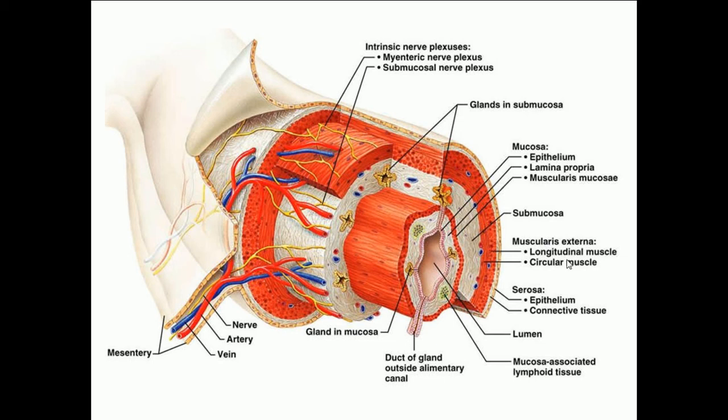The fibers of the inner layer of smooth muscle are oriented circumferentially around the GI tract and are called the inner circular layer. The fibers of the outer layer are oriented lengthwise along the GI tract and are called the outer longitudinal layer. At specific locations, the inner circular muscle layer is greatly thickened to form a sphincter, which closes off the lumen to help control movement of materials. The nerve fibers and associated ganglia located between the two muscle layers are collectively referred to as the myenteric nerve plexus.